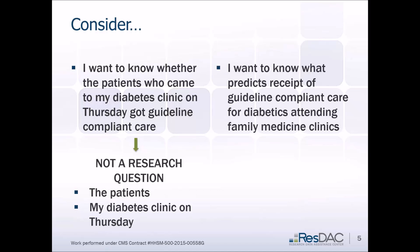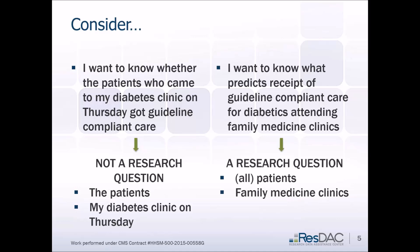However, if we rewrite it to say: I want to know what predicts receipt of guideline-compliant care for diabetics attending family medicine clinics — notice this is broader and it's a research question. It's asking about a broader group of patients. It's still specific to clinics, but it's really asking about predictors and broader associations among variables.